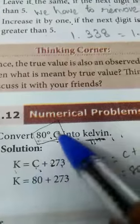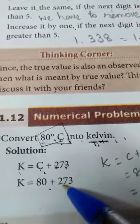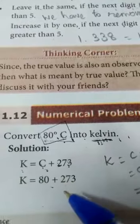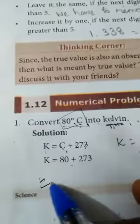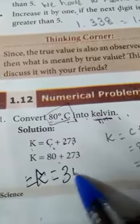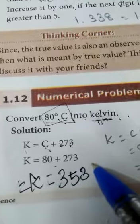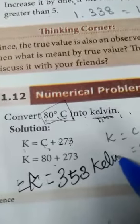So C value how much? 80. Then Kelvin 273. So we add the answer. What answer will come? K is equal to 353 Kelvin. Can you understand?